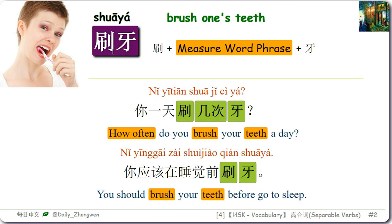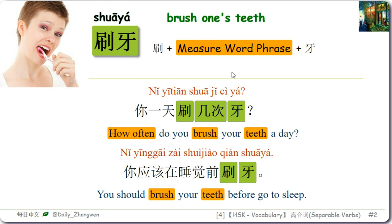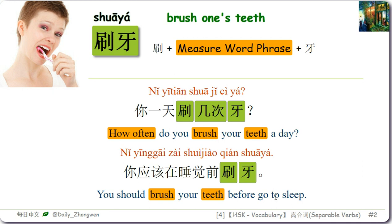刷牙 means brush teeth. You can add a measure word phrase between 刷 and 牙, like 刷几次牙 or 刷两次牙. For example: 你一天刷几次牙 — How often do you brush your teeth a day? 你应该在睡觉前刷牙 — You should brush your teeth before going to sleep.